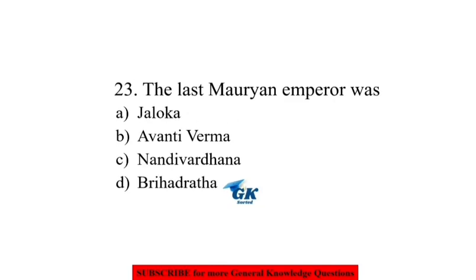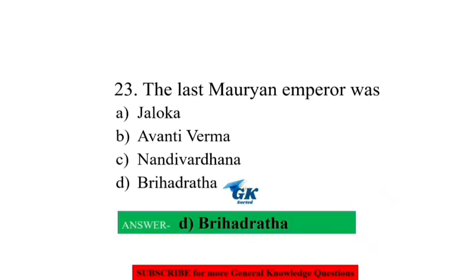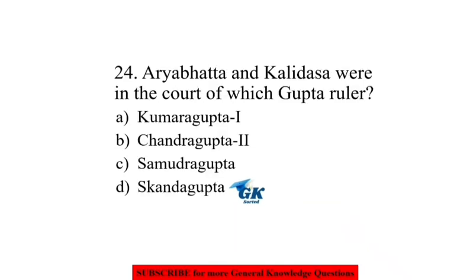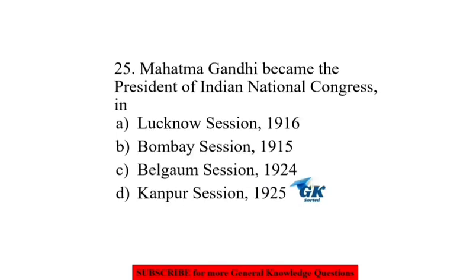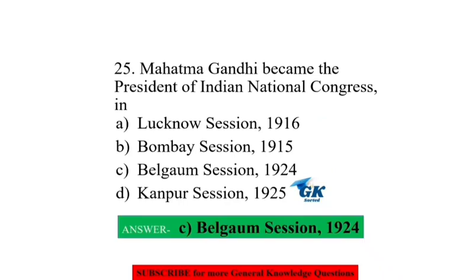The last Mauryan Emperor was Vrihadratha. Aryabhata and Kalidasa were in the court of which Gupta ruler? Chandragupta II. Mahatma Gandhi became the President of Indian National Congress at the Belgaum Session in 1924.